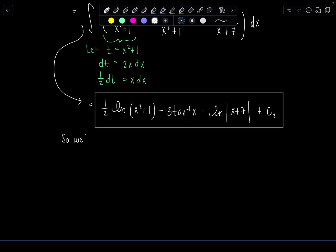We have 3 over x squared plus 1. Well, that's just going to be 3 times tan inverse of x. Beautiful. 3 tan inverse of x minus, and then last one would be ln absolute value. In this case, I can't drop them because I have no guarantee that x plus 7 is positive. Plus c2.